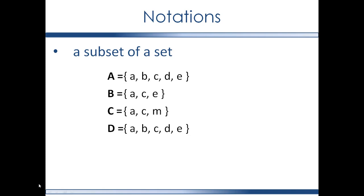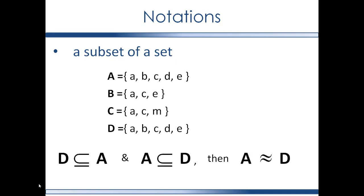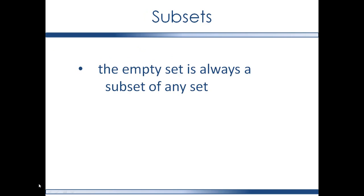Let's introduce a new set here, set D. Every element in set D is also an element of set A, and every element in set A is also an element of set D. This is different from set B and set A, where all the elements of B are also found in A, but there is at least one element in A not found in B — so B is considered a proper subset of A. But the relationship between D and A can be denoted this way: if D is a subset of A and A is a subset of D, then D is equivalent to A. Here's another tidbit: the empty set is always a subset of any set, which we'll see again in the next topic, which is power sets.